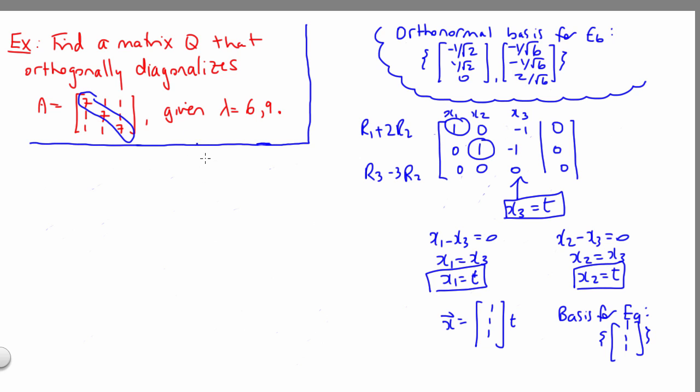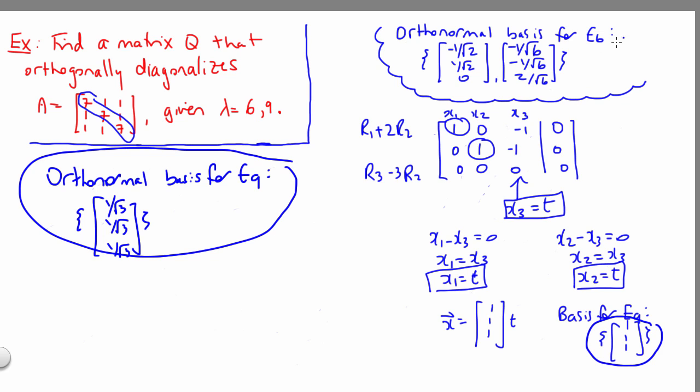Now remember that we're trying to orthogonally diagonalize A, meaning we need an orthonormal basis for each eigenspace. Now in this case, we're lucky that our eigenspace only contains a single vector. So all we really need to do is normalize this vector, meaning divide it through by its own length, so that it's got length 1. Length of this vector over here is root 3. So an orthonormal basis will be 1 over root 3, 1 over root 3, 1 over root 3. So we've now done the hard work for the problem. We've found an orthonormal basis for our two eigenspaces. And now we'll put this information together.